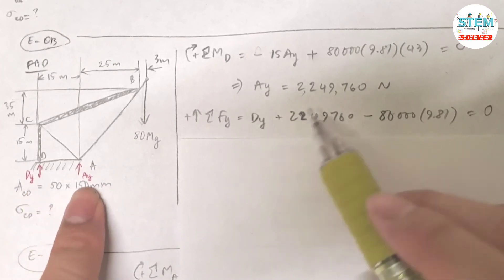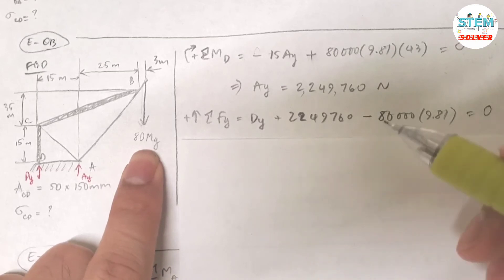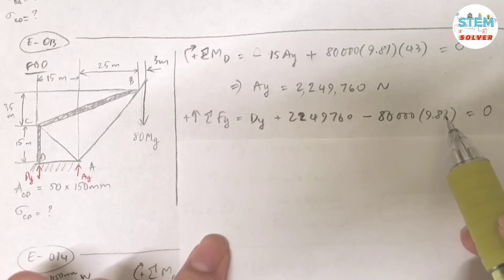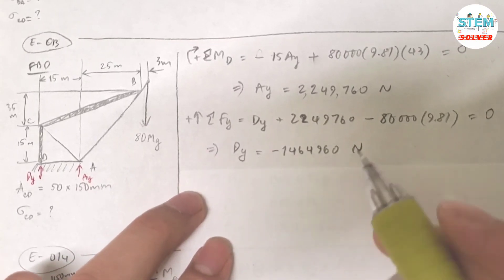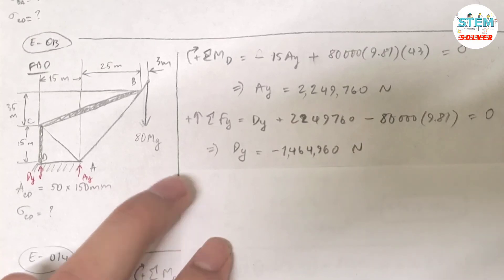So DY plus AY, which is this, minus 80,000 times 9.81. Because 80,000 is in kilogram, which is the mass, so you have to multiply by the gravity to convert it into newtons, the force. Then set this expression equals 0. Then I got DY equals 1,464,960 newtons.